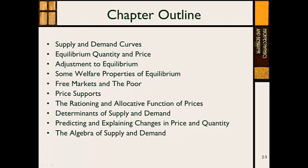Supply and demand curves, equilibrium, quantity, and price, adjustments to equilibrium — also called comparative statics — some welfare properties of equilibrium. We're talking about free markets and the poor, price supports, the rationing and allocative function of prices, determinants of supply and demand, predicting and explaining changes in price and quantity, and finally we will end with some algebra.